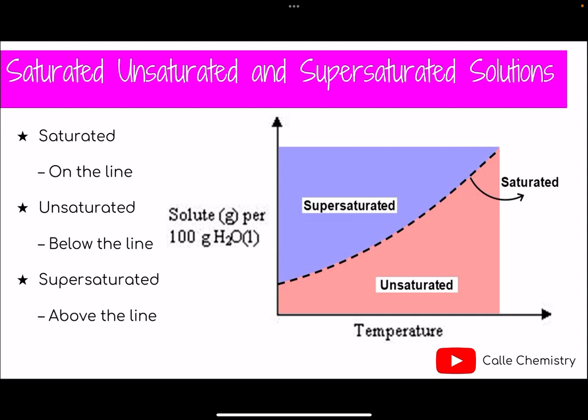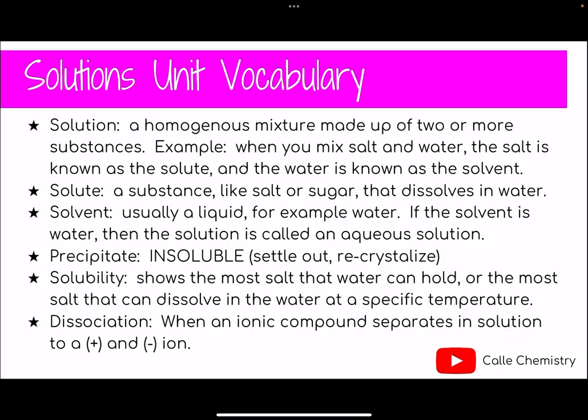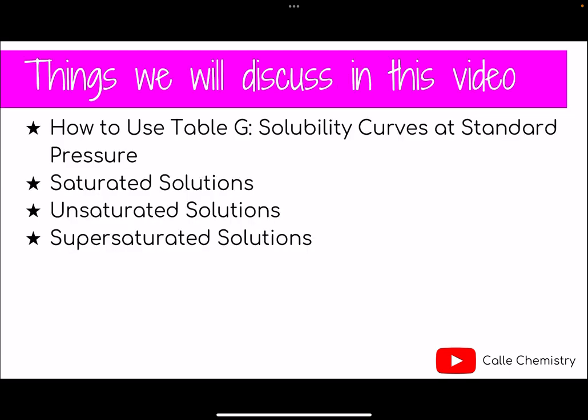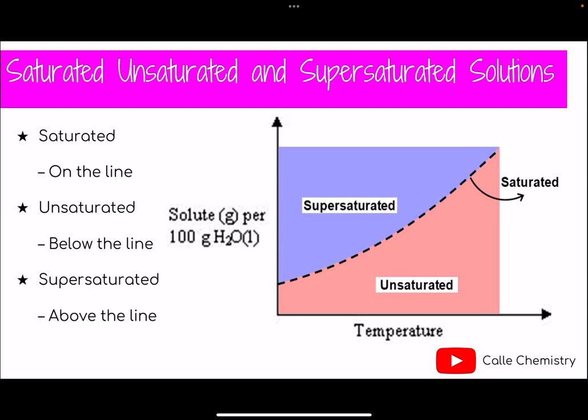When we're looking at solubility curves, there are a lot of curves on Table G. It can be overwhelming. When looking at one of the solubility curves, we have to be cautious that we're only looking at that one and not confuse it with the others. If a problem gives you a certain temperature and how many grams of solute are dissolved in 100 grams of water — because Table G is out of 100 grams of water — and they give you a point that falls on the curve...